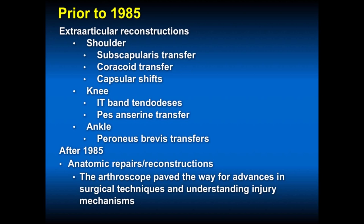What about the ankle? Today we try to address the capsule and ligaments directly, doing modified Broström repairs, which is more of an anatomic reconstruction. Prior to the mid-80s, we did a lot of peroneus brevis transfers. This stabilized the ankle but was extra-articular and actually over-constrained the subtalar joint, and some people got too stiff and developed subtalar osteoarthritis.